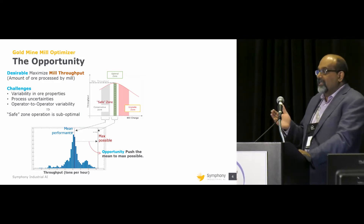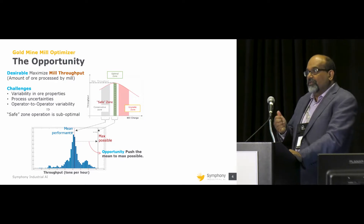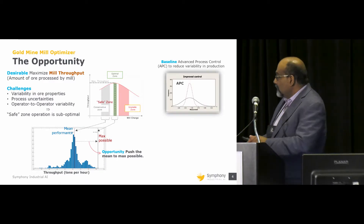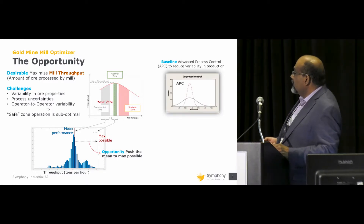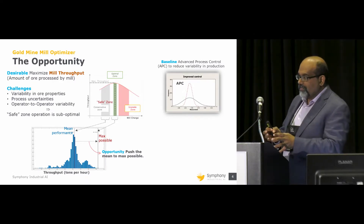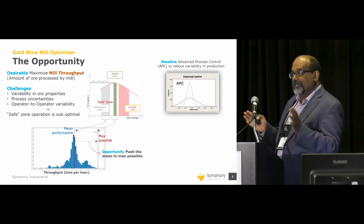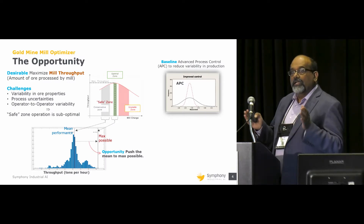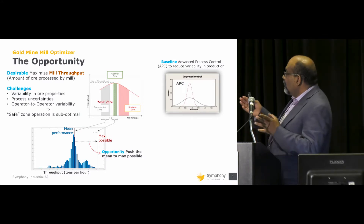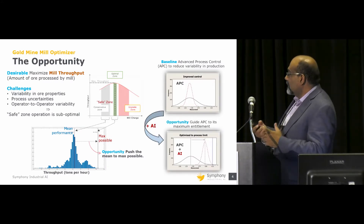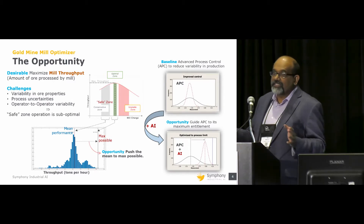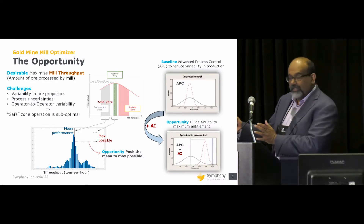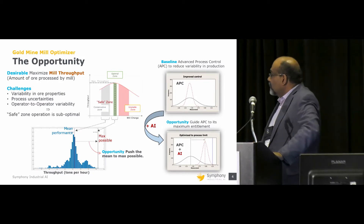Traditionally, the operators have been operating in very safe zones, because they have only so much ability to know how much they can push it. What machine learning was able to do — the good news is the advanced process controller, the MPC, worked in the sense that it reduced the process variability. But it still operated within very safe zones. What the machine learning algorithm and continuous learning was able to do is push the limits of how much feed can be pushed through, and increase the amount of feed that can go through this process.